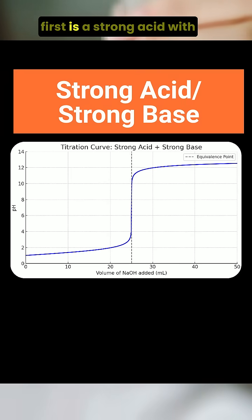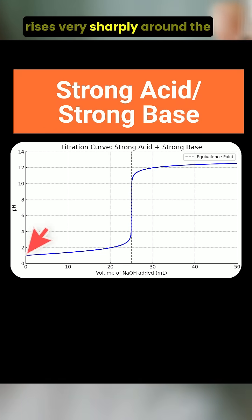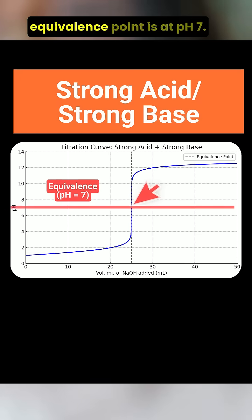The first is a strong acid with a strong base, such as hydrochloric acid titrated with sodium hydroxide. This curve starts at a low pH, rises very sharply around the equivalence point, and the equivalence point is at pH 7.